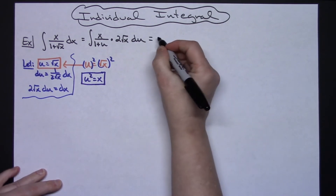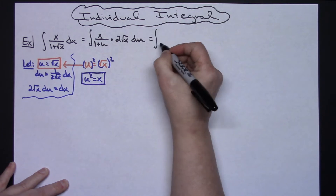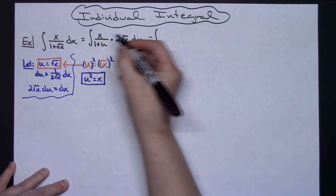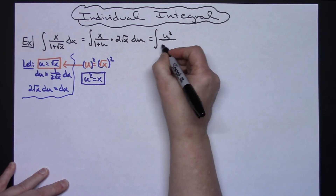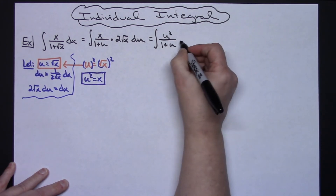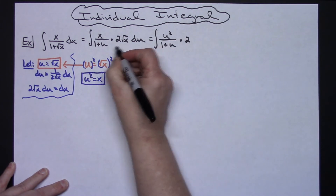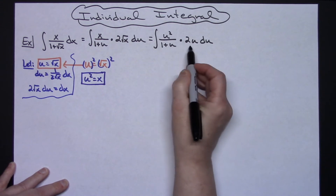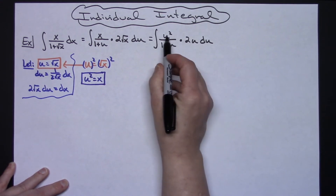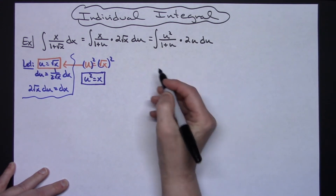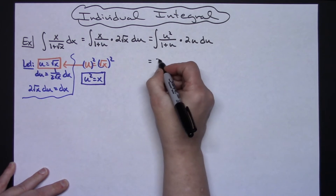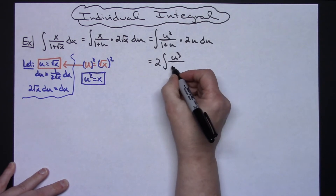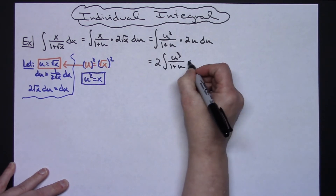Making those additional substitutions, we get the integral of u squared over 1 plus u times 2u du. Pulling the 2 out and multiplying u squared by u, we end up with 2 times the integral of u to the third over 1 plus u du.